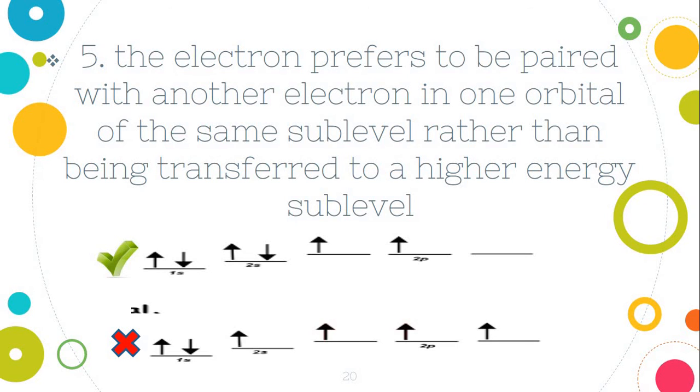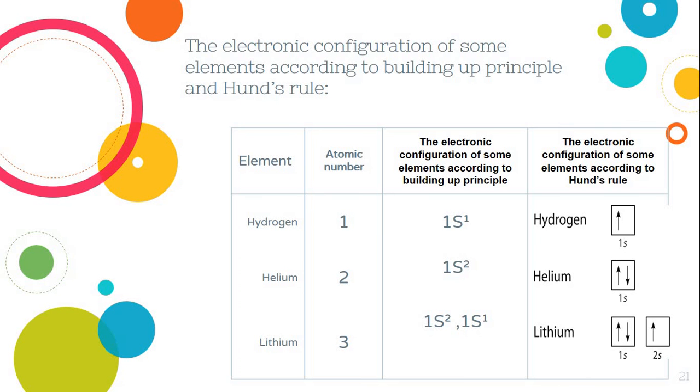Electrons pairing takes place in the orbitals of the same sublevel after occupying all the sub-orbitals by the unpaired electrons. The electron prefers to be paired with another electron in one orbital of the same sublevel rather than being transferred to the higher energy sublevel. Here is an example for the building up principle and Hund's rule electronic configuration.